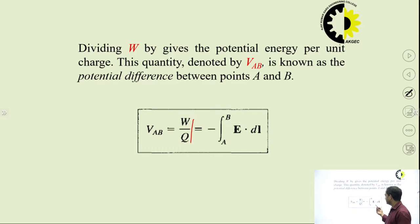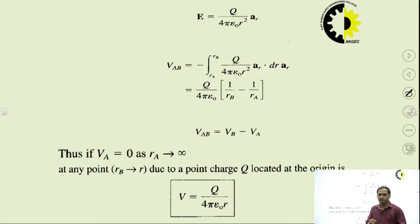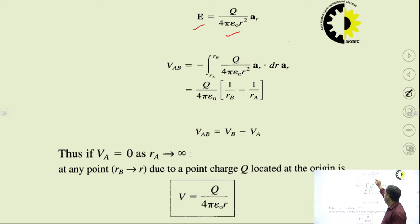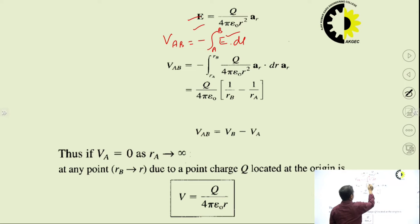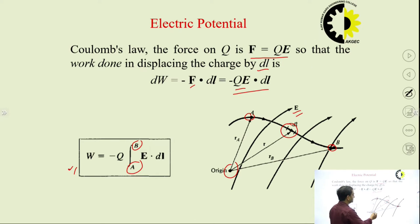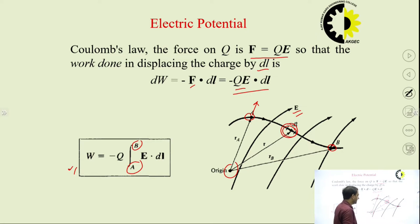This is the potential when we are moving from point A to point B. As we are aware, the electric field for the point charge is Q/(4πε₀R²) · AR. We can put the value of the electric field into the previous expression. So VAB = -∫E·dL from A to B. We put E = Q/(4πε₀R²)·AR. This AR is nothing but the direction — the direction R for this particular DL. The position vector for A is RA and the position vector for B is RB.